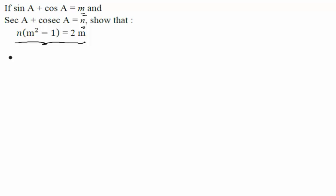So let us start with LHS. In LHS, we already have n. We also know the values of m and n, so just substitute these values in our LHS and see whether it comes out to be equal to 2m or not. So n, what is n? n is sec a + cosec a, right?